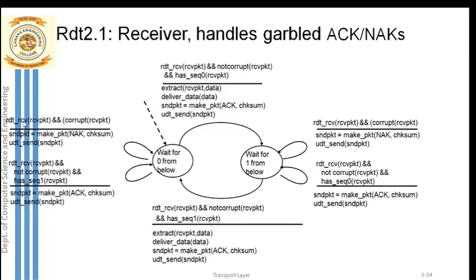What if the received packet is a corrupted packet? The receiver has received the packet, but if the received packet is corrupted, he will prepare a negative acknowledgement. This means the receiver is expecting the sender to retransmit the packet, because he has not received it in proper format. For all acknowledgement packets including negative acknowledgements, checksum is added before sending.